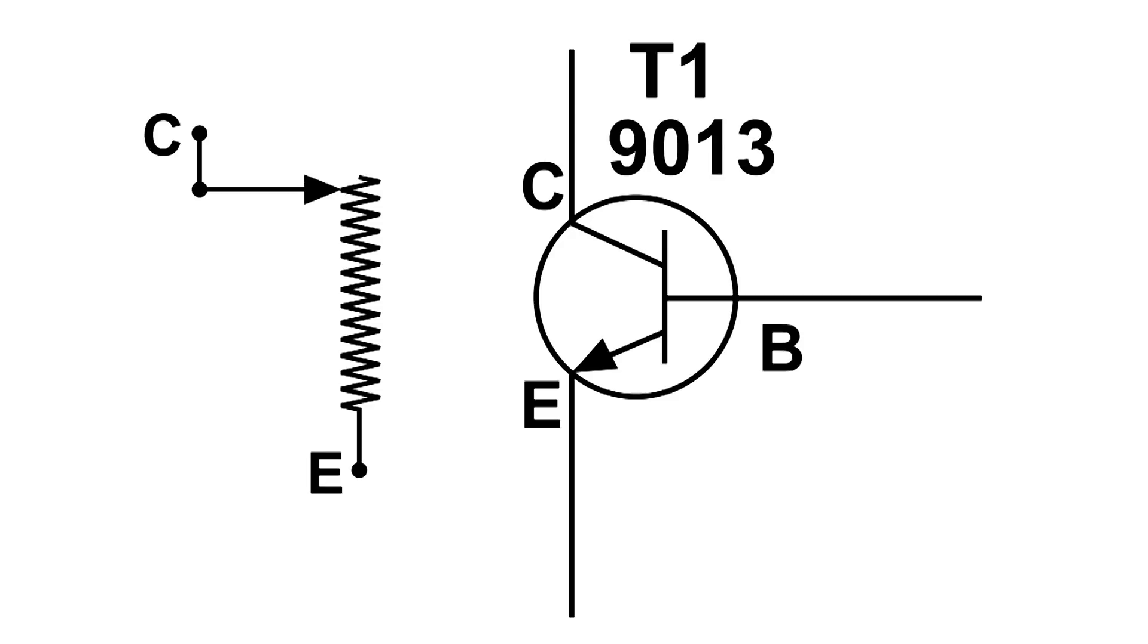Now this large amount of resistance would be like having a very small positive voltage on B. And as we increase the voltage, the resistance between E and C decreases.